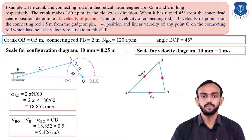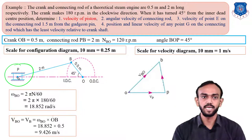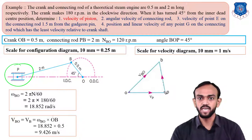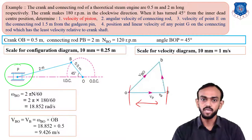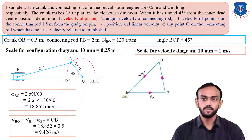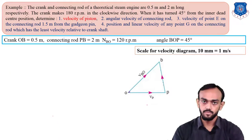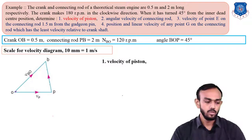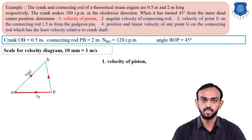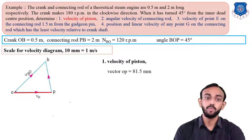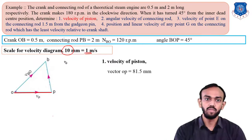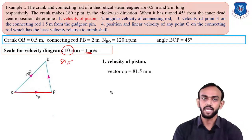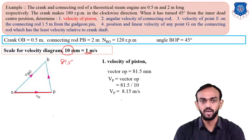Now, the first thing to find is the velocity of the piston. In the space diagram, P is the piston, and in the velocity diagram P is the corresponding point. We measure the distance from O to P in the velocity diagram, which gives 81.5 mm. Using our scale of 10 mm equals 1 meter per second, we divide 81.5 by 10 and get the velocity of the piston as approximately 8.15 meter per second.